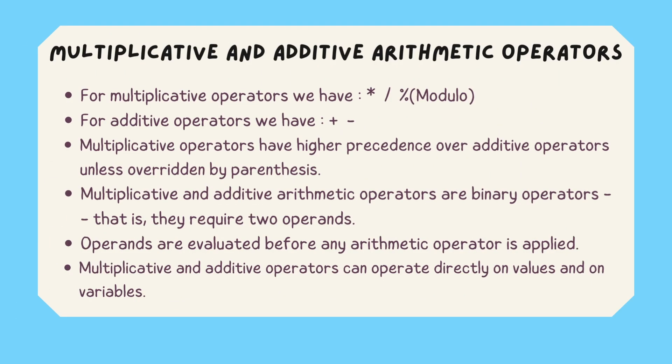Now let us look at the multiplicative and additive arithmetic operators. For the multiplicative operators we have the asterisk, the division, and the modulo. For the additive operators we have the plus and the minus sign. We need to remember that the multiplicative operators have higher precedence over the additive operators unless it is overwritten by parentheses. Also, the multiplicative and additive operators are binary operators — they require two operands, and the operands are evaluated before any arithmetic operator is applied. They can operate directly on values and on variables.